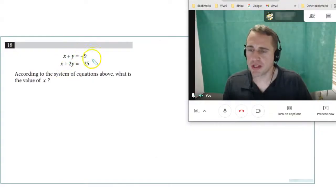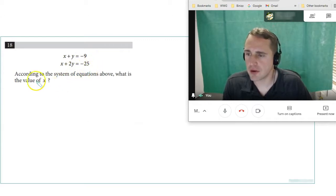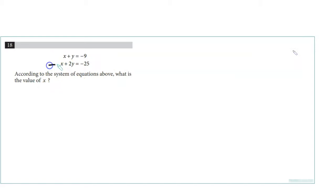Number 15: x+y equals negative 9, x+2y equals negative 25. According to the system of equations above, what's the value of x? I would just subtract this equation from this one. So the x's go away. That's negative y equals negative 9 plus 25, so that's 16, so y is negative 16. But once you have negative 16, x minus 16 equals negative 9, so x should equal 7.